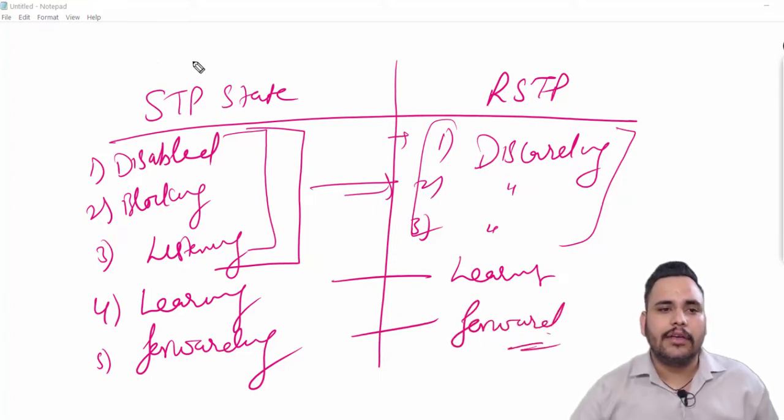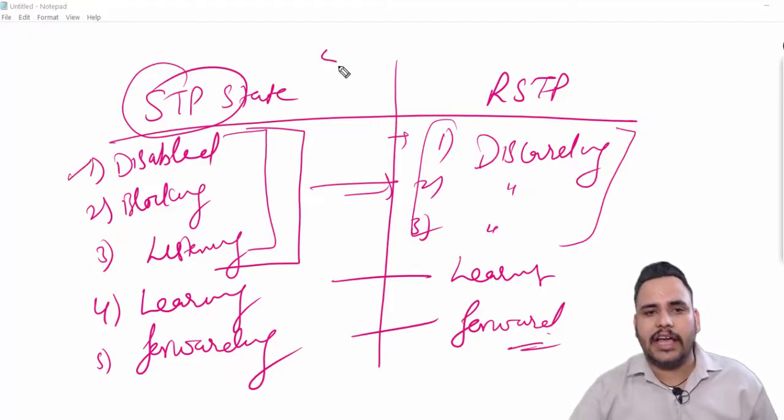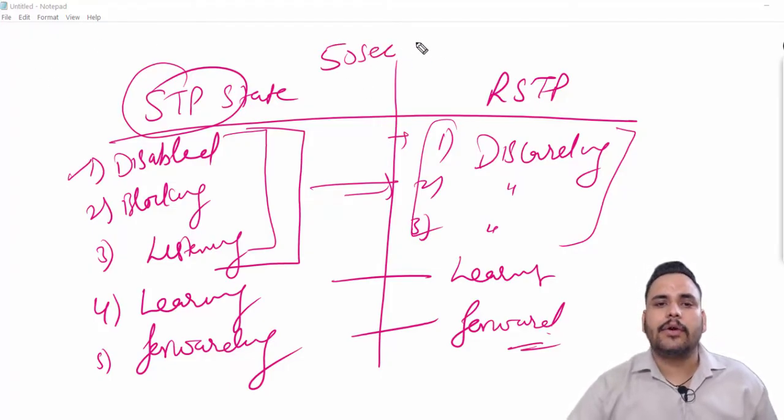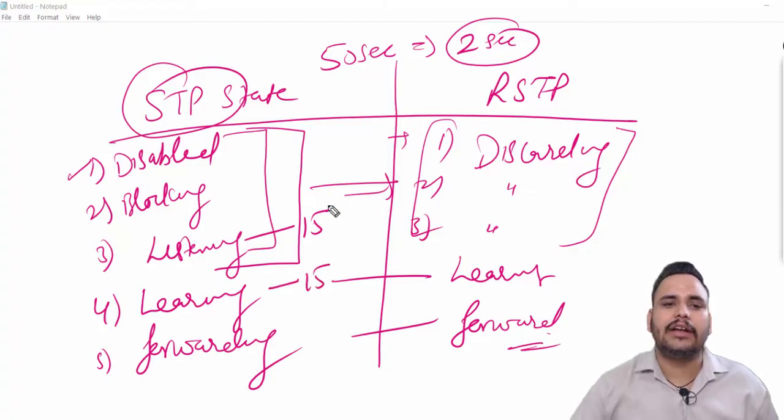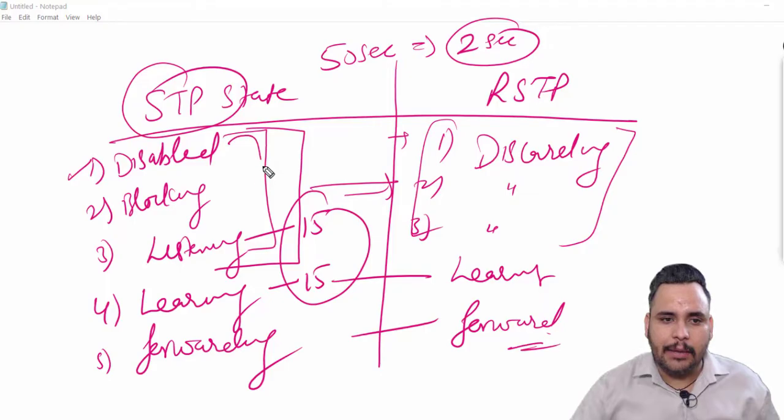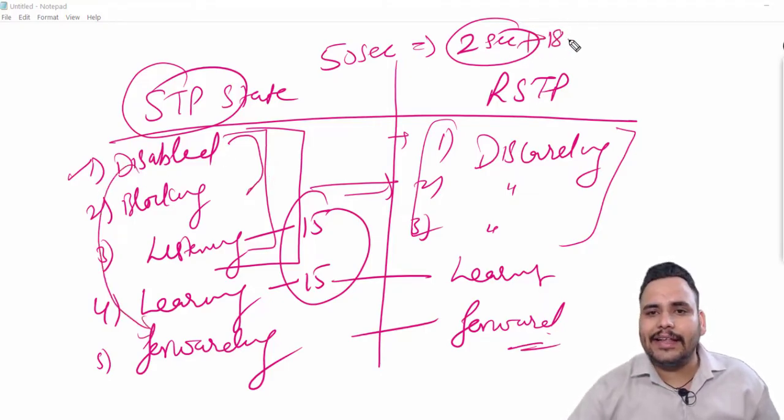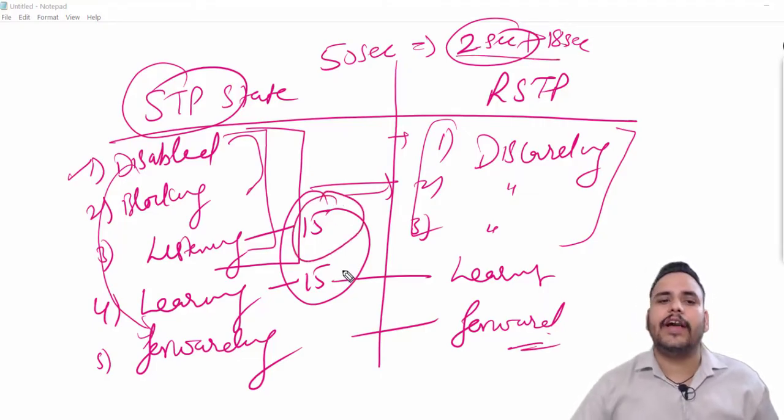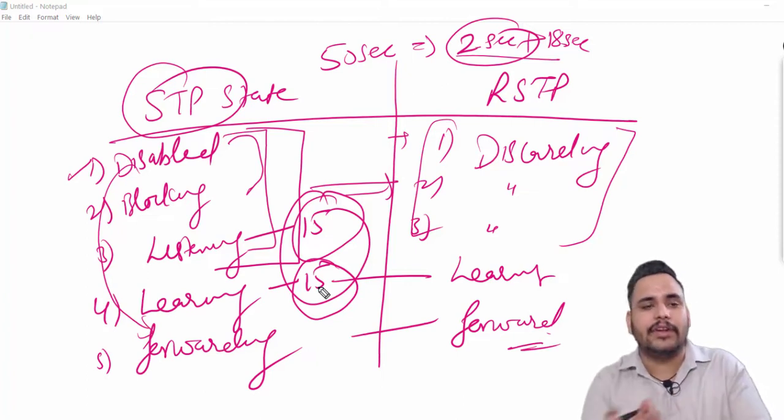First we need to understand about the states. The total STP convergence time is 50 seconds, in which two seconds is the hello timer, listening will take 15 seconds, learning will take 15 seconds, and the process from disable to blocking or disable to forwarding will take 18 seconds extra. So 18 plus 2 is 20, 20 plus 15 is 35, and 35 plus 15 is 50. The total STP convergence time is 50 seconds.